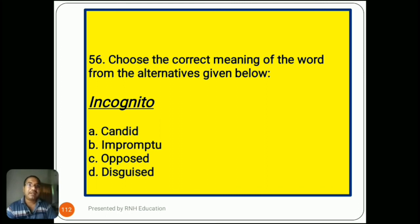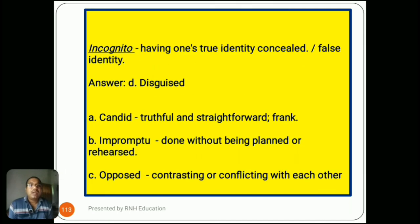Question number 56: 'Choose the correct meaning — incognito.' Options are A) candid, B) impromptu, C) opposed, D) disguised. Incognito means having one's true identity concealed — a false identity. The answer is D) disguised. Option A, candid, means truthful and straightforward or frank. Option B, impromptu, means done without being planned or rehearsed. Option C, opposed, means contrasting or conflicting with each other.